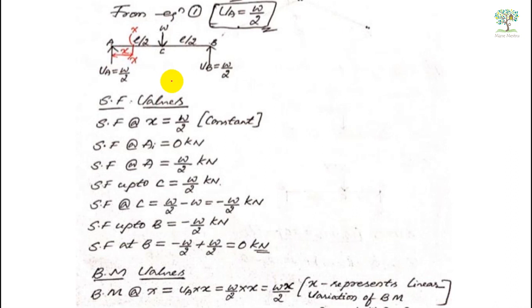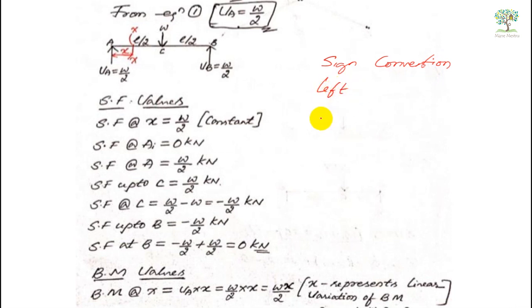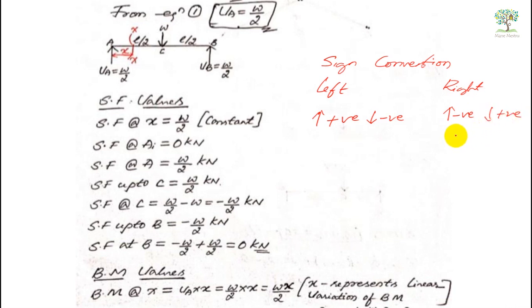Now we have to calculate the shear force values. Before that, let me explain the sign conventions for shear force. When measuring from the left side, upward forces are taken as positive and downward forces as negative. When measuring from the right side, upward is negative and downward is positive. I suggest you always follow from the left side until you clearly understand the concept.